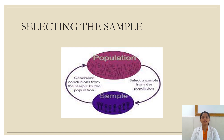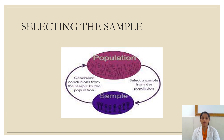The next step in survey is selecting the sample. This is very important because the sample selected for a survey should be recruited from the general population in such a way that the outcome obtained from the sample could be generalized to the general population. Any sample recruited from the population should be similar in characteristics to the general population, so it is very crucial to select a sample considering all these criteria.